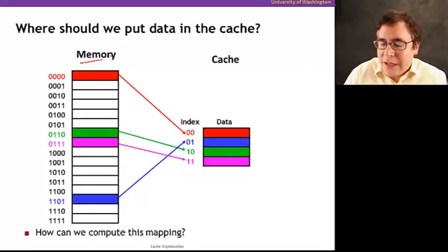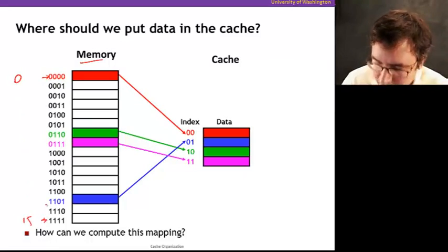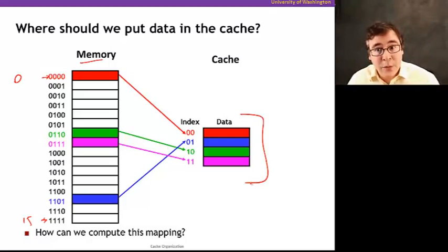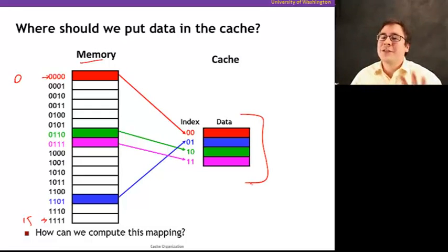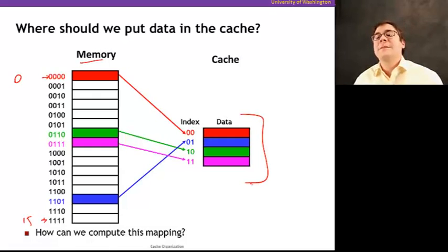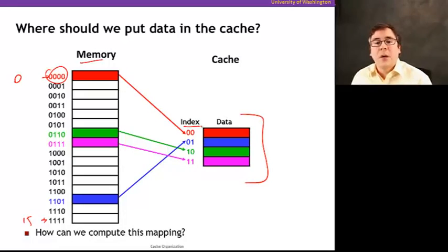Suppose that we have a very simple memory whose addresses go from 0 to 1111 in binary — from address 0 to address 15. Here's our cache. As I said before, the cache holds a subset of memory, so the cache is going to be smaller than memory. Memory is bigger than the cache, and that means we have to somehow map data in memory to where it goes in the cache. Since memory is bigger, there will be different memory locations that map to the same place in the cache.